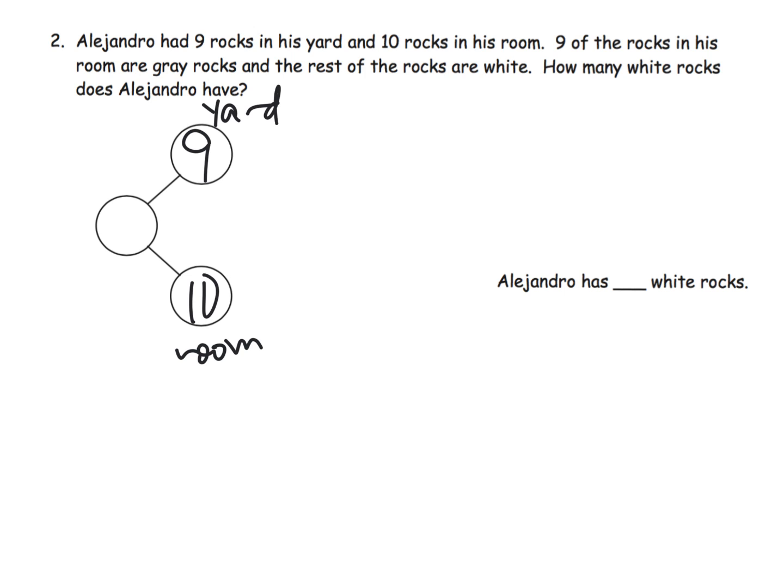So the idea would be, so first off we have 19 right here. And we're going to draw this. So 10, 1, 2, 3, 4, 5, 6, 7, 8, 9, 10, and 9. 1, 2, 3, 4, 5, 1, 2, 3, 4. So we've drawn our model. And then we're going to go back and read it.